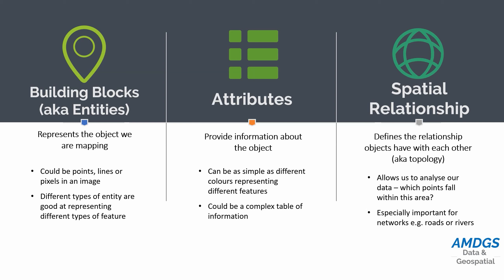So we have building blocks — entities, the objects that make up our map — and then we have attributes, the information that sits behind them. And then we have the spatial relationships between these features, which is what allows us to carry out analysis. Most of the time we don't need to worry about this unless we're getting into more complex GIS, but it's useful to know that in the background the GIS software is considering these spatial relationships.